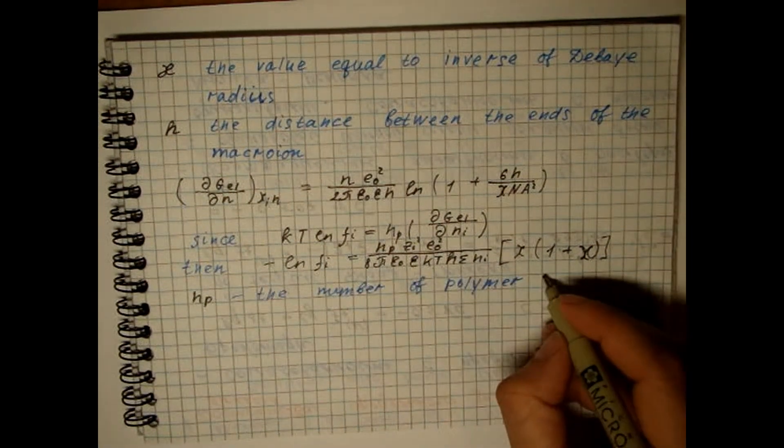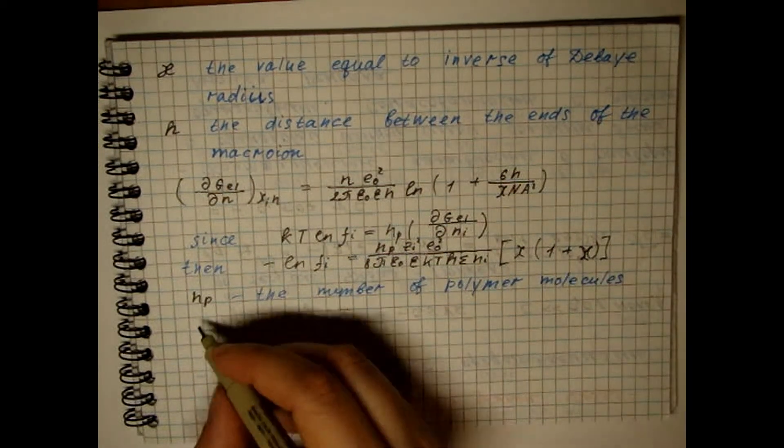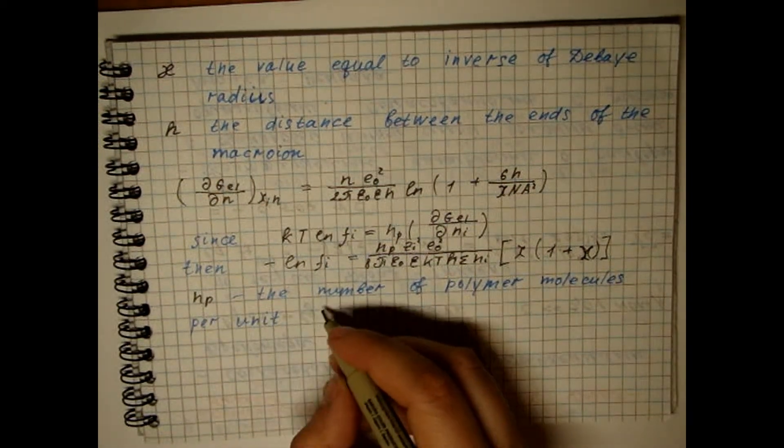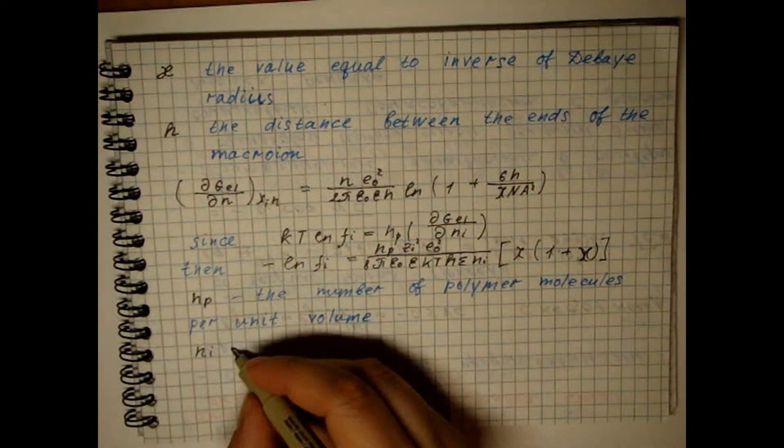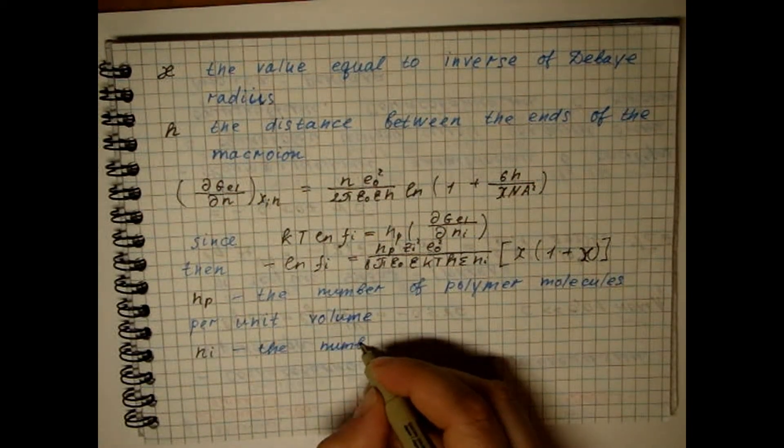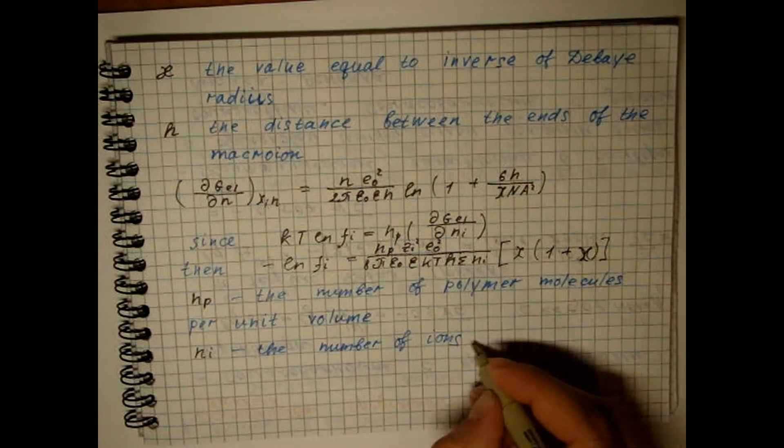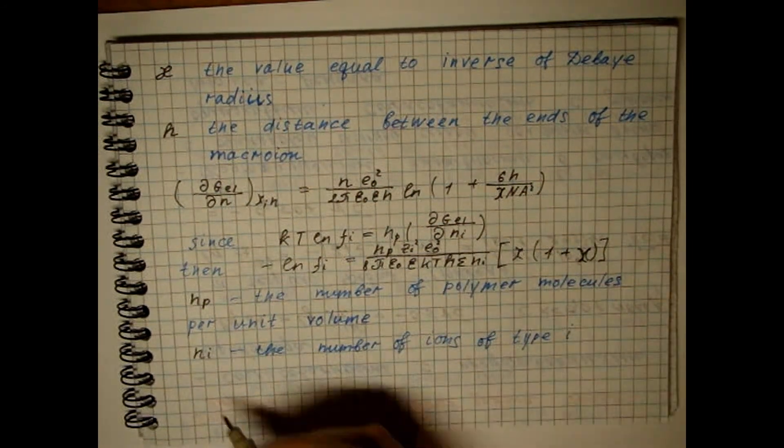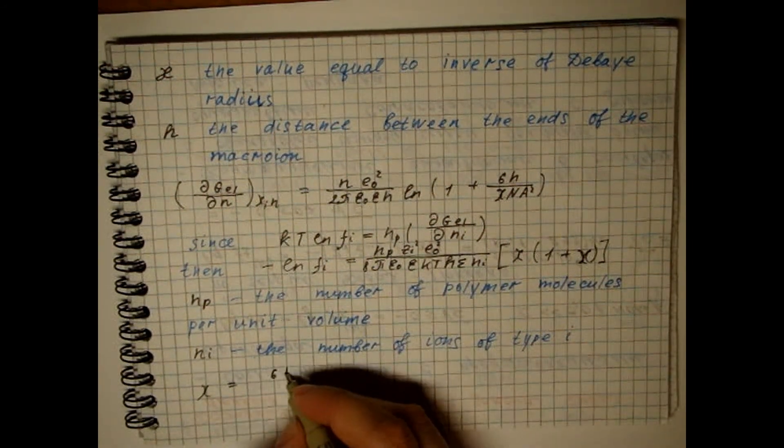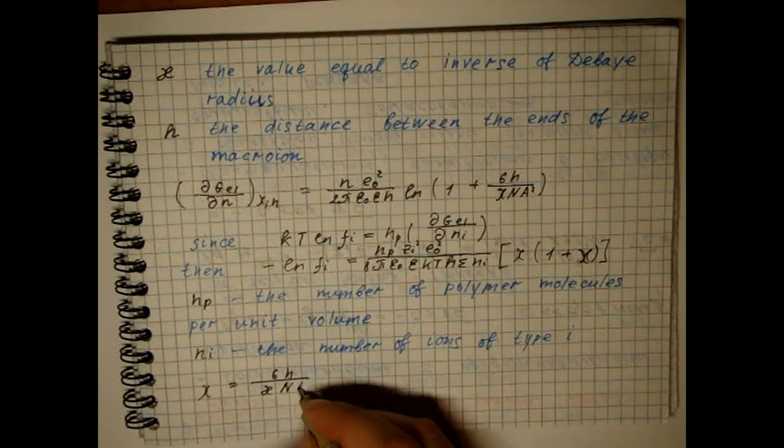In the behavior of polyelectrolytes, an important role is played by the binding of a contour ion to a macro ion, which is due to the column interaction and is predicted by general electrostatic theories, but can also be caused by specific interaction between small ions and a macro ion.